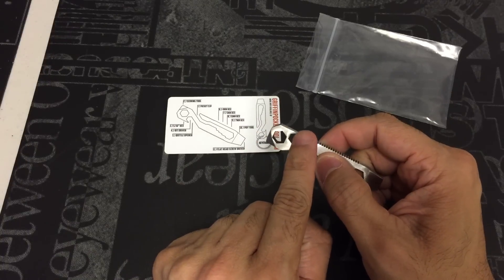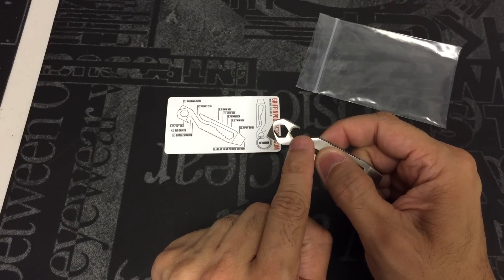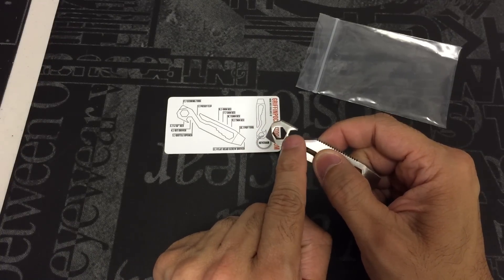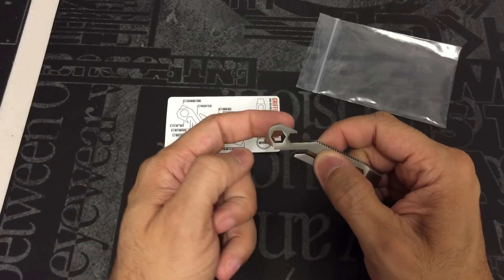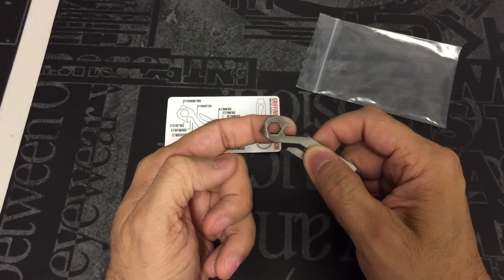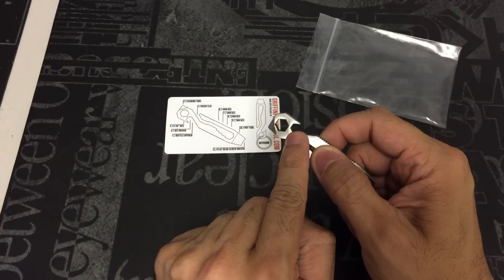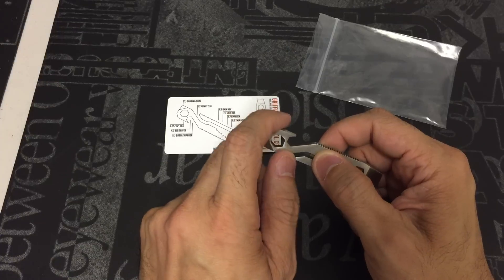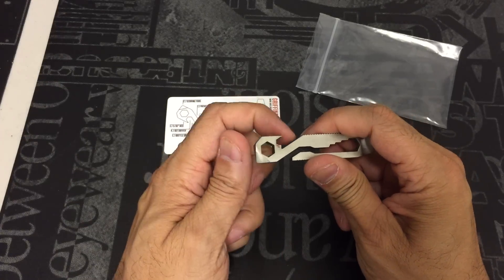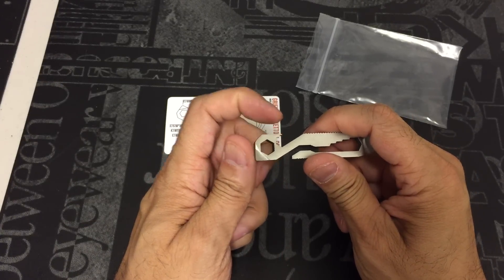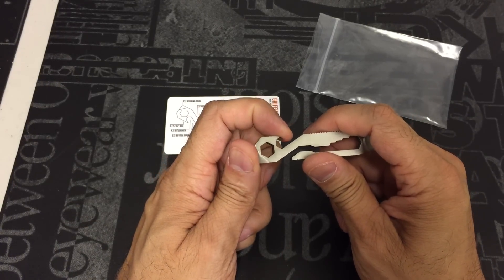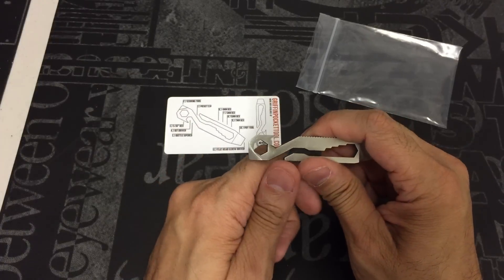On the side right here, you have a tool that actually serves two purposes. One, it's a bit driver. So you can actually attach this to a bit and turn it. And then also a bottle opener. I find myself using the bottle opener pretty often. And I can safely say that it works every time. And it hasn't loosened up or chipped out or anything like that.